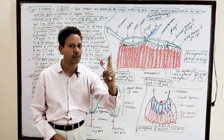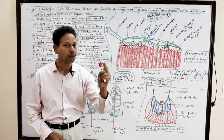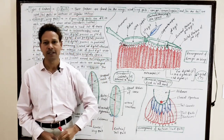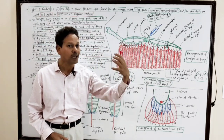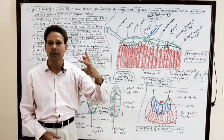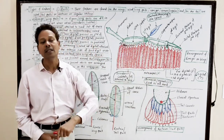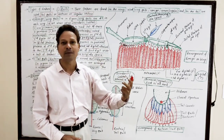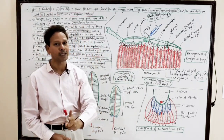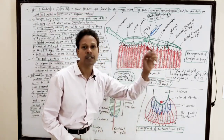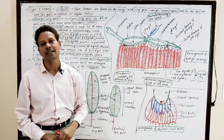Note down this important lecture for BSc and MSc students. Types of feathers: the first type is quills, present on wings and tail region, so these are of two types. Wing quills, scientifically named ramages or ramex, and tail quills present on the tail uropygium, named rectrices.